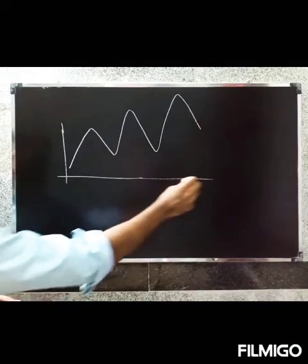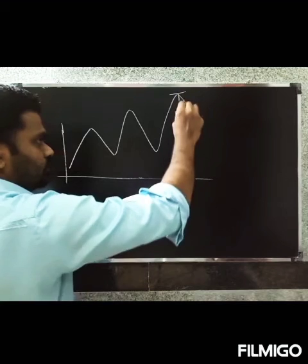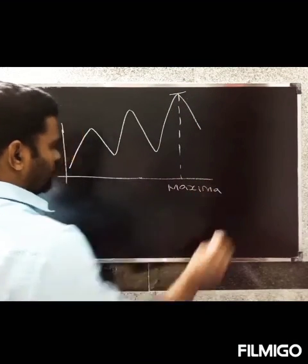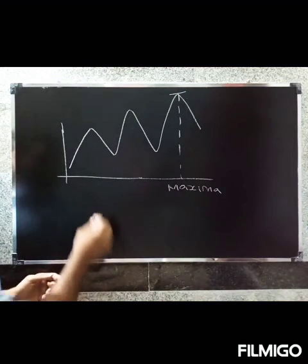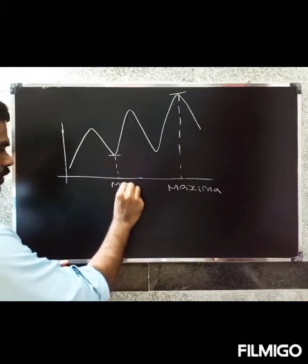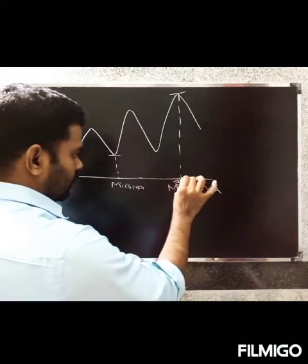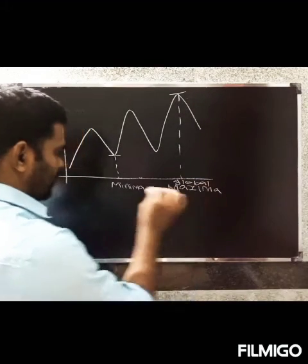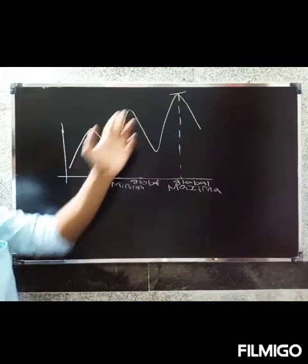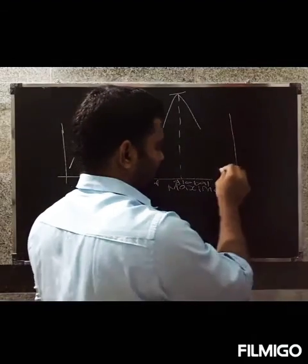So if you have any point that is the highest across the full interval, that is the global maxima. If the maximum is only within a small region and not over the full interval, it is local maxima. Similarly for minima — global minima is the lowest over the total full interval, while local minima is only within a smaller interval.